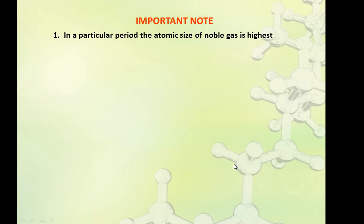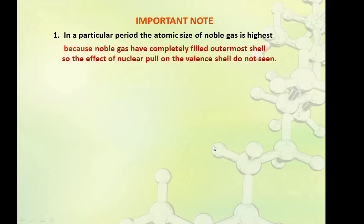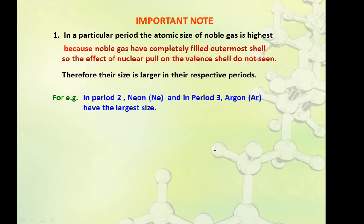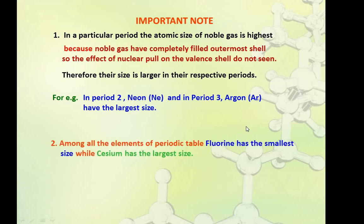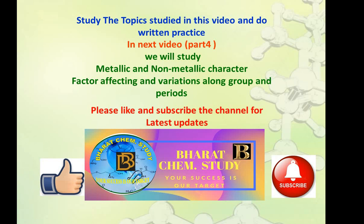Important notes: In a particular period, the atomic size of the noble gas is the highest. As we move along a period, atomic size first decreases, but at the noble gas it increases again because the noble gas has a completely filled outermost shell, so the effect of nuclear pull is reduced. For example, in period 2 Neon and in period 3 Argon have the largest atomic size. Also note: among all elements in the periodic table, Fluorine has the smallest atomic size and Cesium has the largest size. These facts may come in one-mark questions.